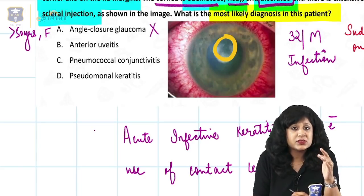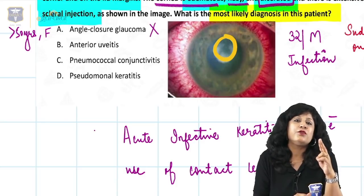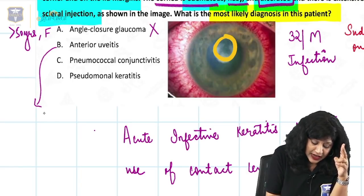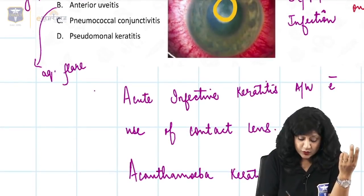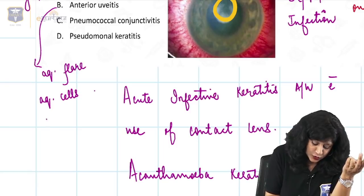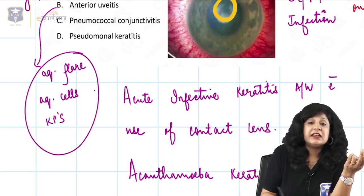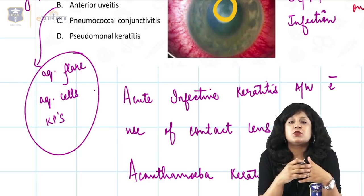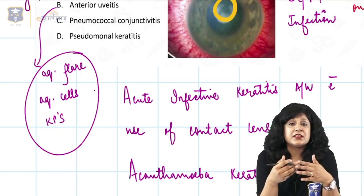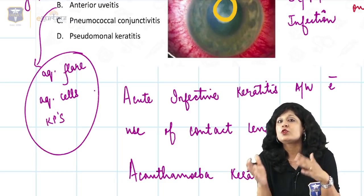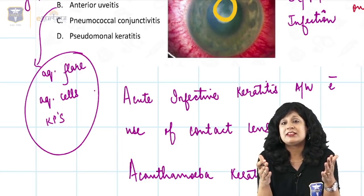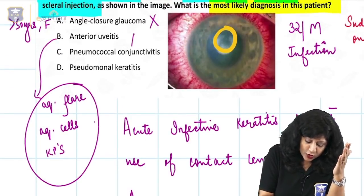The second differential is anterior uveitis. The earliest and most important signs of uveitis are aqueous flare, aqueous cells, and keratic precipitates — none of which are mentioned here. Though chronic back pain can be associated with uveitis, it is not sufficient on its own, and the history and examination are not diagnostic of uveitis. So this is not uveitis.